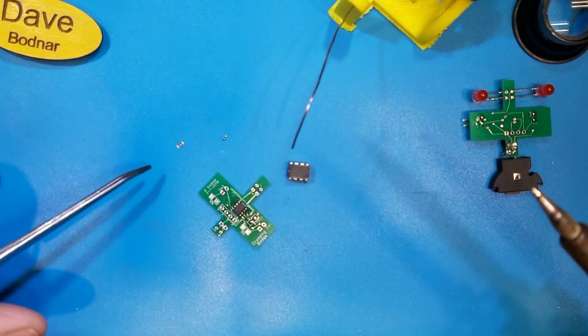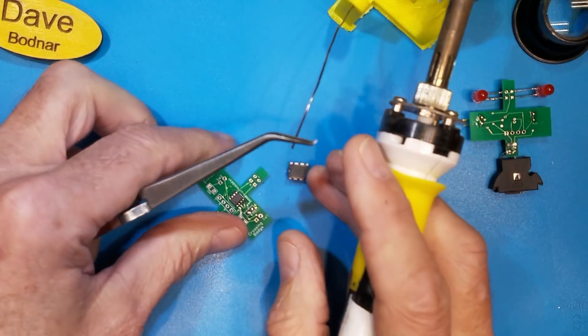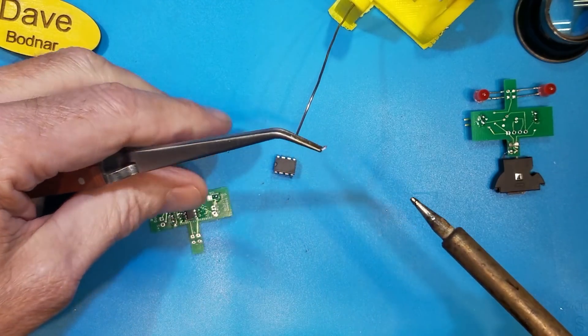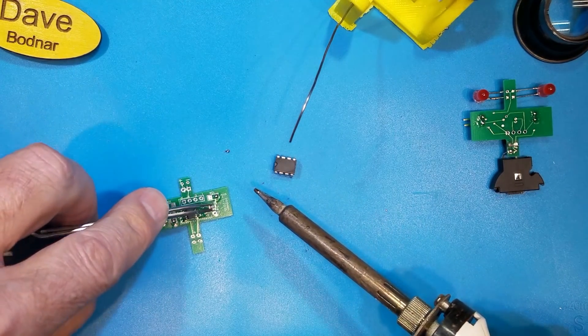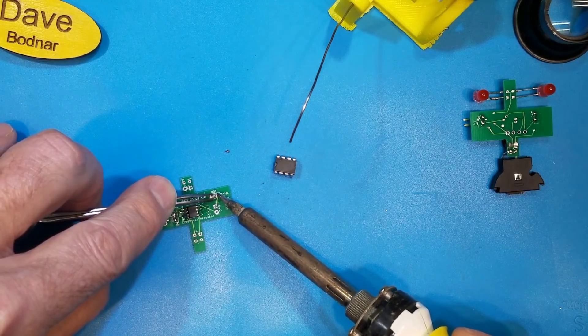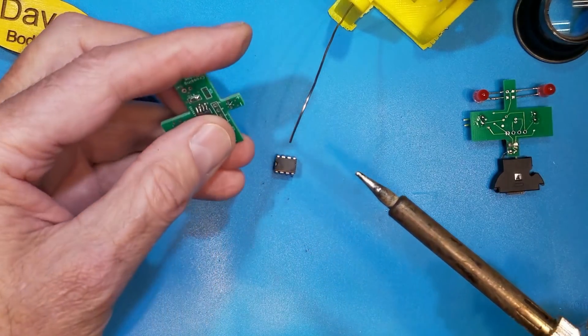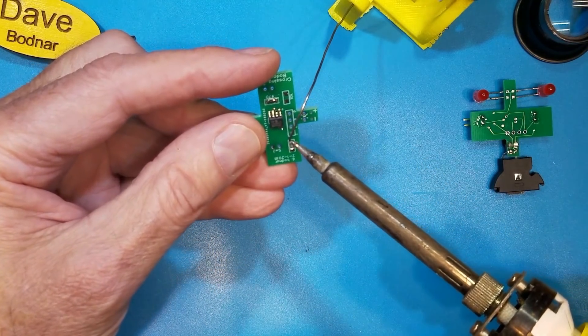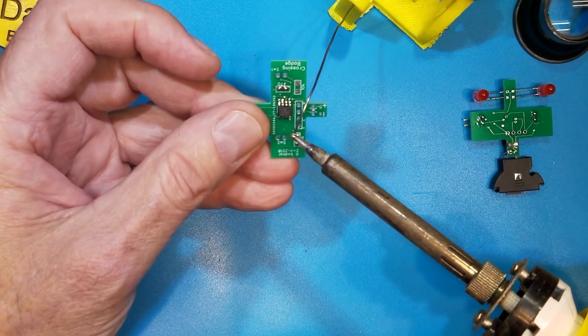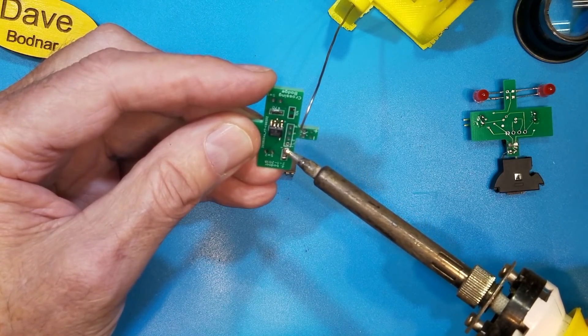And the last thing I want to do is put the 10K resistor. The first step is to put a little bit of solder on one of the pads. Bring that 10K up onto that pad. And by the way, resistors, it doesn't matter which way you put them on. It's not like a diode or a transistor. And a little bit of solder on the other end. Let me get a little more on there. And we should be in business with that.